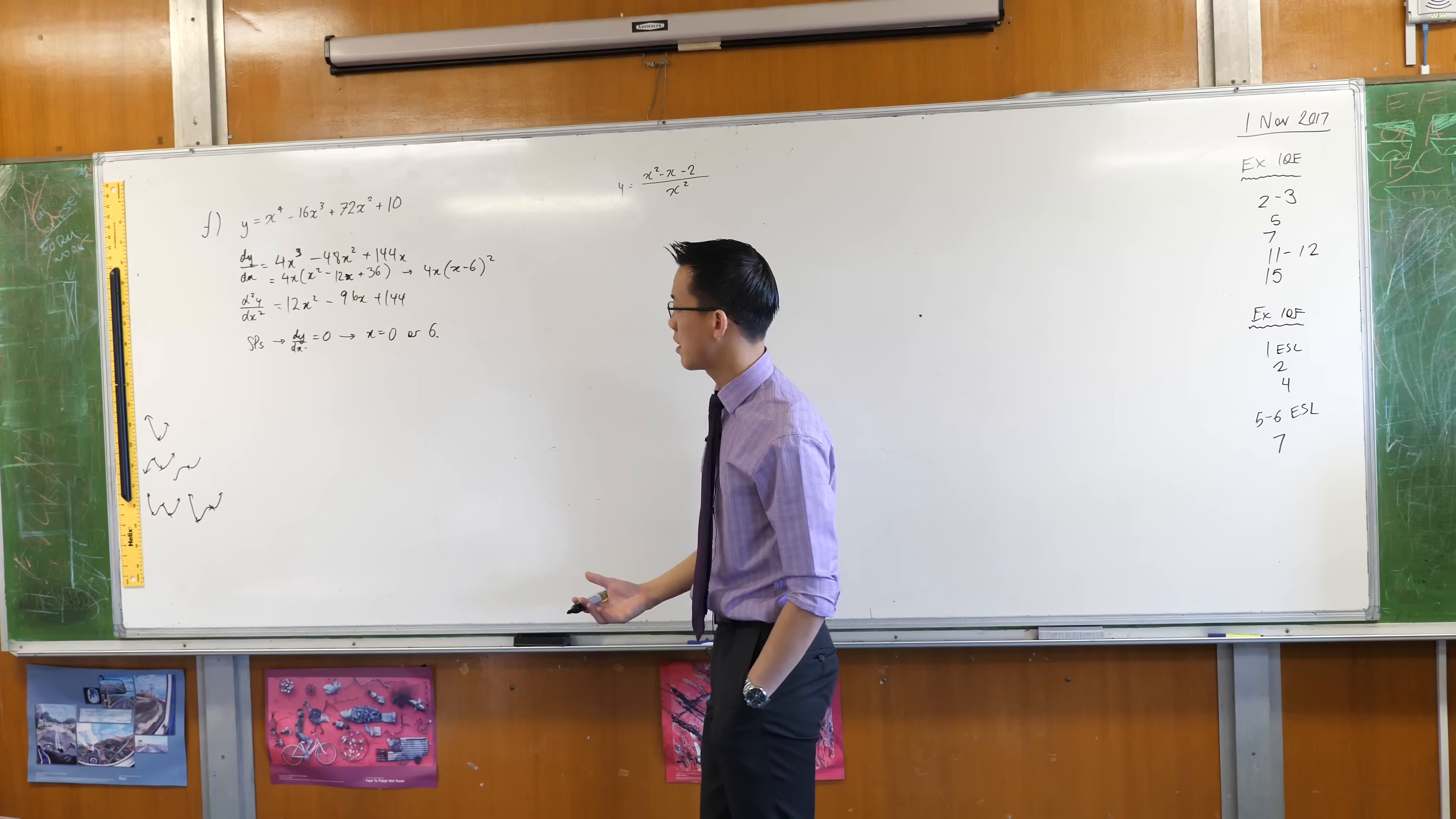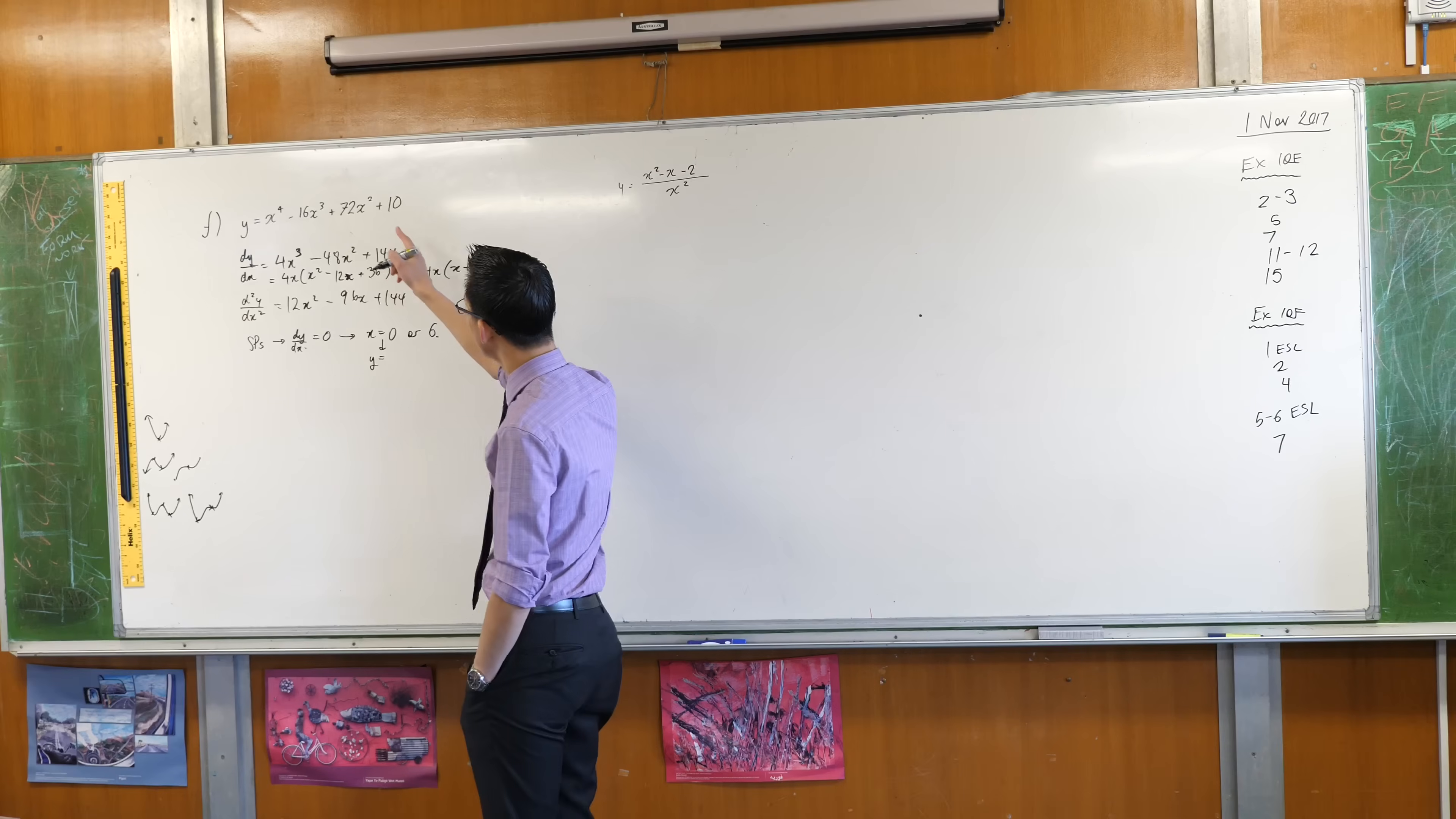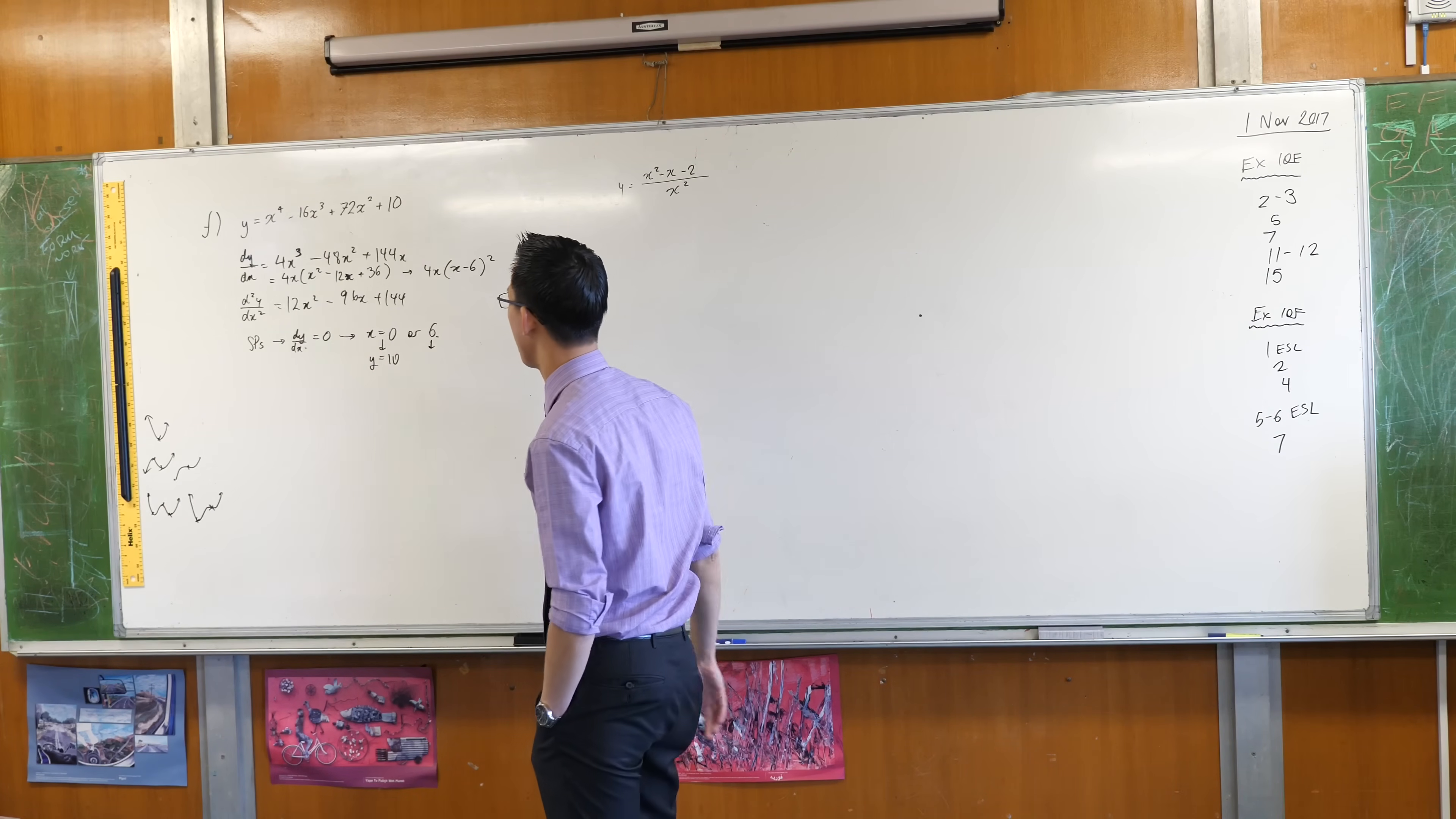When x equals zero, that's convenient because that's going to give you the y-intercept anyway. When x equals zero, y is going to be 10.